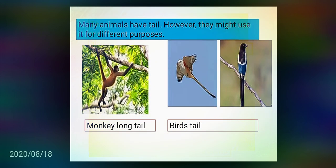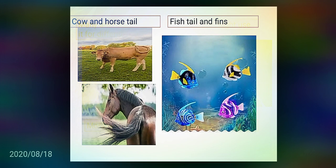Many animals have a tail; however, they might use it for different purposes. As you can see in pictures: a monkey's long tail, a bird's tail, a cow and horse tail, and a fish tail with fins.